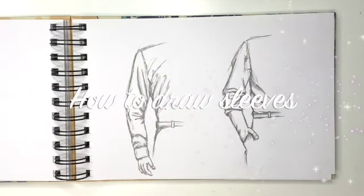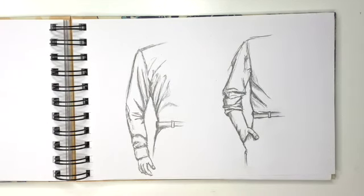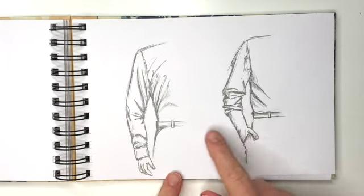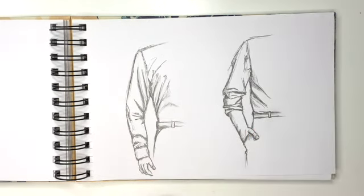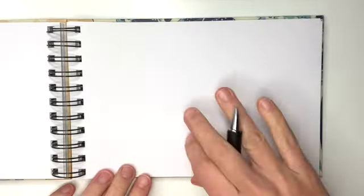Everyone this is Kasia, I'm feeling artsy and today we're going to learn how to draw shirt sleeves. One is going to be straight down and the other one will be rolled up. If you enjoy drawing with me, make sure you subscribe down below. To complete this project you will need a piece of paper and a pencil.